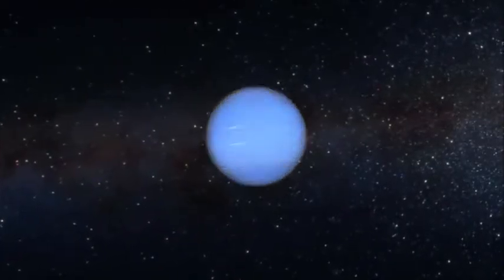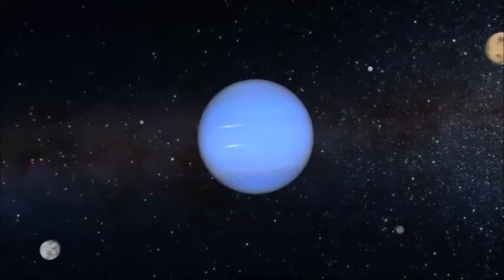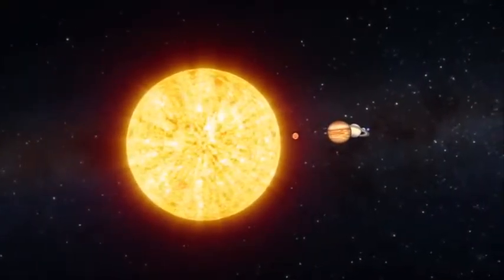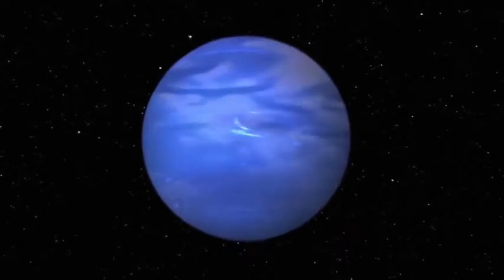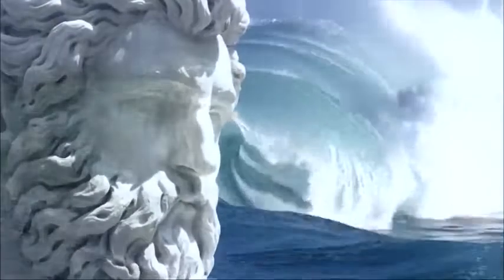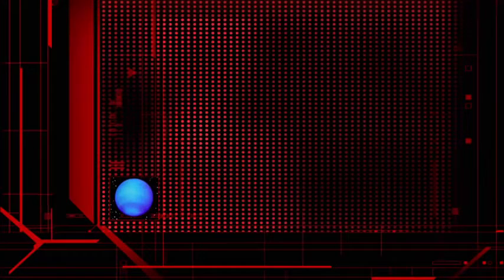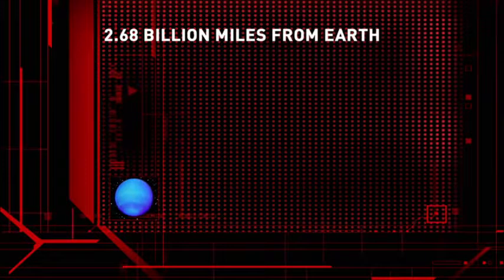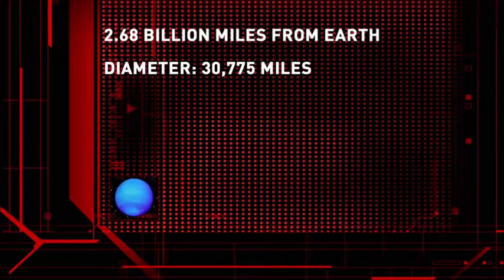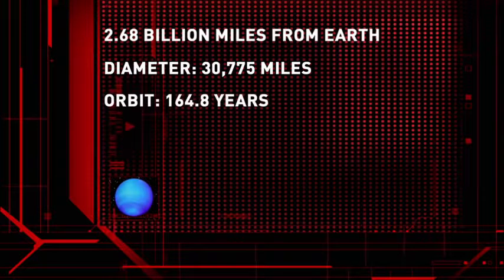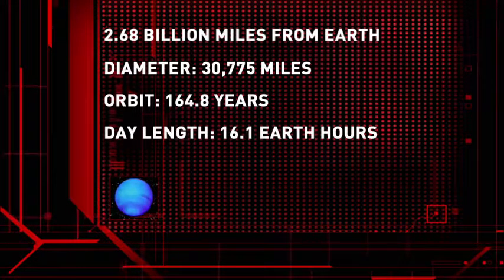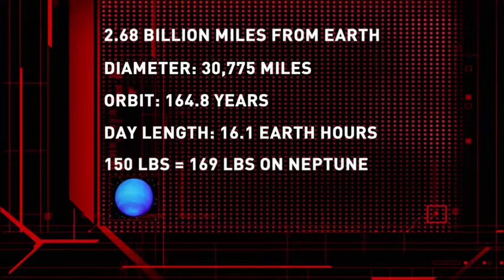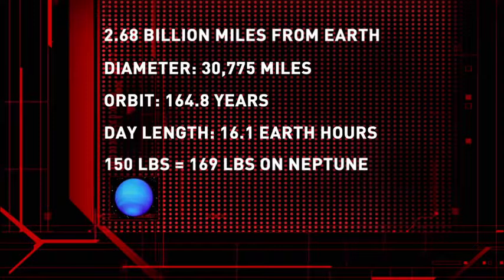Uranus shares the outer solar system with its sister planet, Neptune, a gleaming sapphire some three billion miles away from the sun. With the demotion of Pluto, Neptune is now our outermost planet. Neptune takes its name from the Roman god of the seas. Neptune is 2.68 billion miles from Earth. Measuring roughly 30,000 miles, Neptune's diameter is four times that of Earth's. A year on Neptune is equivalent to 165 Earth years, and a day lasts 16.1 hours.